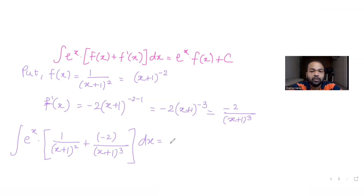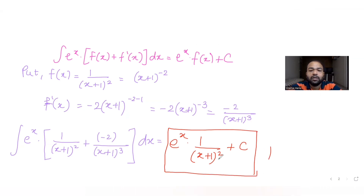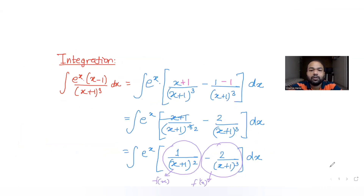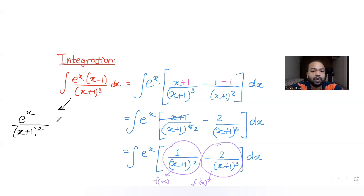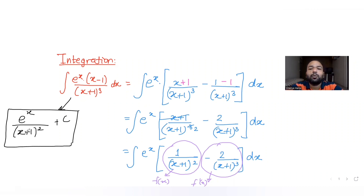So my answer becomes e raised to x times 1 upon (x plus 1) the whole square, plus C. To summarize: the integral of e raised to x into (x minus 1) upon (x plus 1) the whole cube, dx, gives the answer e raised to x upon (x plus 1) the whole square, plus C. Looking at the options, the correct answer is B.